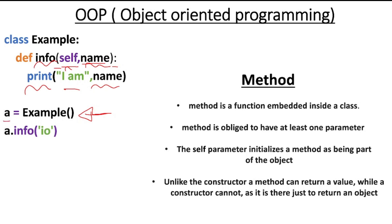Then we will call our object and specifically access the info method by giving it a string as an argument, a string of 'io'. So we will have 'I am io' displayed on our screen.